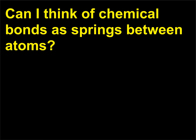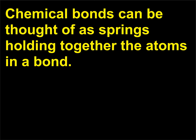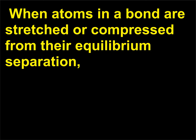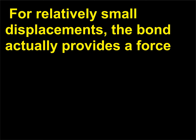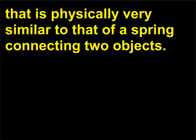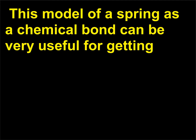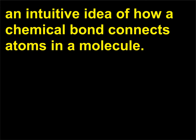Can I think of chemical bonds as springs between atoms? Chemical bonds can be thought of as springs holding together the atoms in a bond. When atoms in a bond are stretched or compressed from their equilibrium separation, the bond provides a force to pull the atoms back together or to keep them from getting too close. For relatively small displacements, the bond actually provides a force that is physically very similar to that of a spring connecting two objects. This model of a spring as a chemical bond can be very useful for getting an intuitive idea of how a chemical bond connects atoms in a molecule.